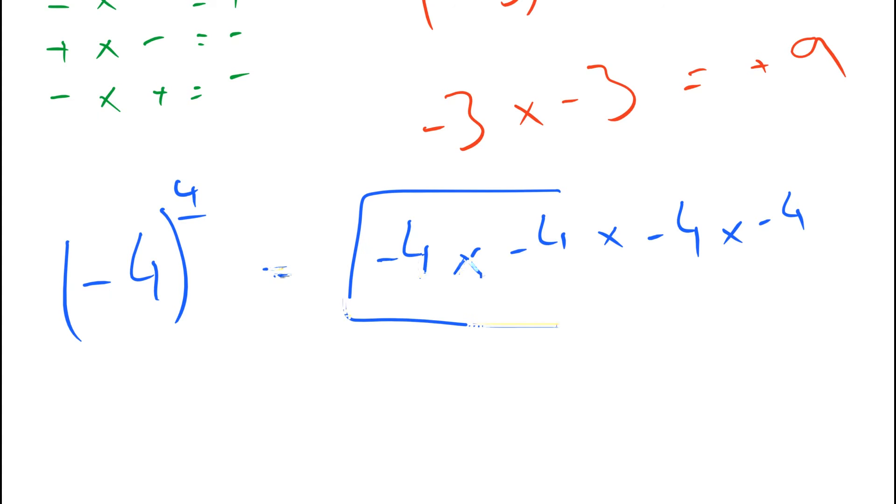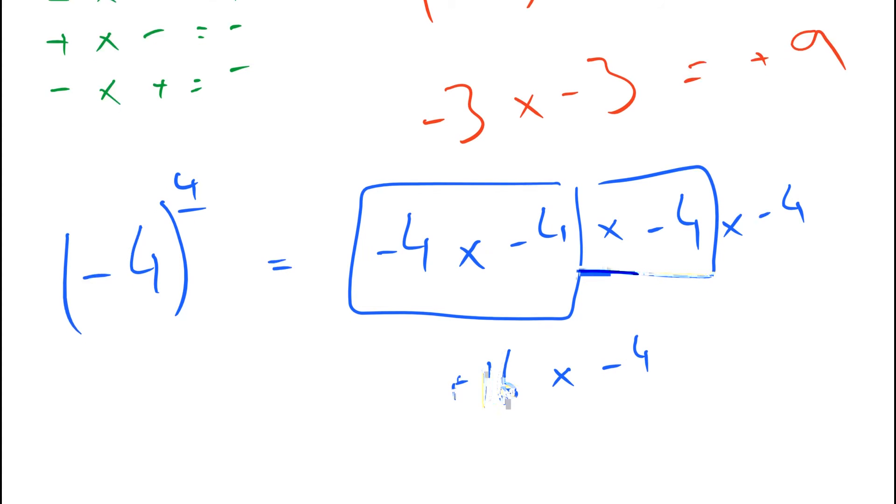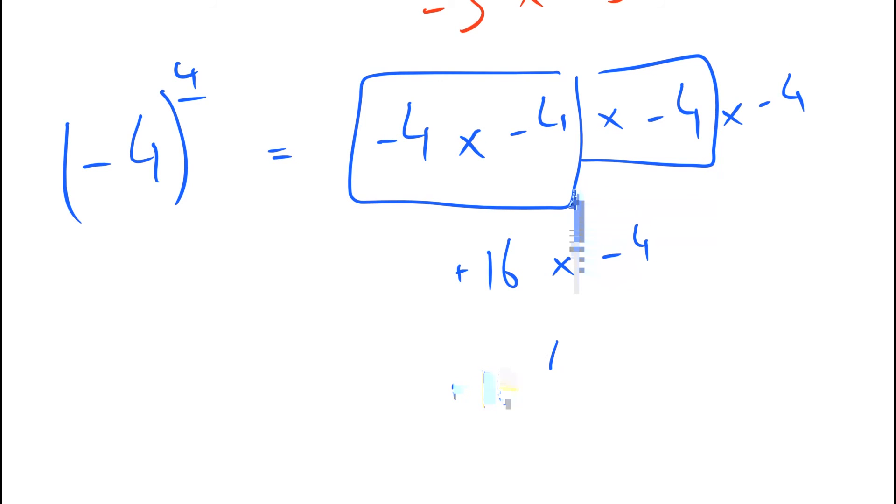Okay so let's work out the first step. 4 times 4 is 16. And a minus times a minus is a plus. Let's do the next step. 16 times 4 is 64. And a plus times a minus is a minus.